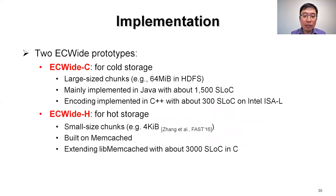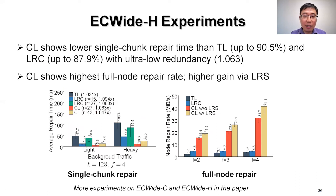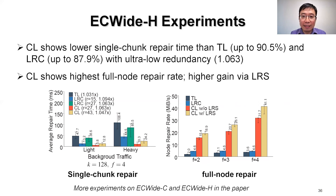We implemented two EC-wide prototypes. The first is EC-wide-C for cold storage with large-size chunks. The second is EC-wide-H for hot storage with small-size chunks atop HDFS. Our experiments on Amazon EC2 show that compared to LRC and TL, combined locality reduces single chunk repair time by up to about 90% with ultra-low redundancy of 1.063. Meanwhile, our combined locality achieves the highest full node repair rate and gains further improvement via LRS.